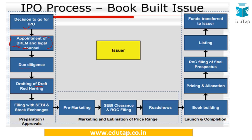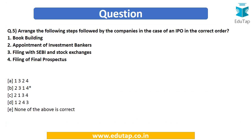We can now easily arrange the steps in the correct order. First is appointment of investment bankers, as they help in each and every step. Next is filing with SEBI and stock exchanges, where the Draft Red Herring Prospectus is filed. Third is book building, to determine the correct price at which securities are to be issued. Finally, the fourth step is filing of the final prospectus. The correct answer is option B.